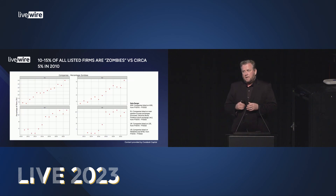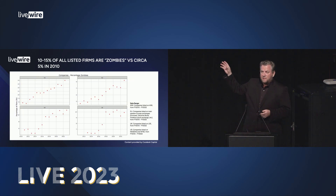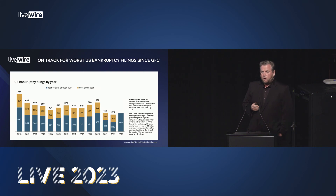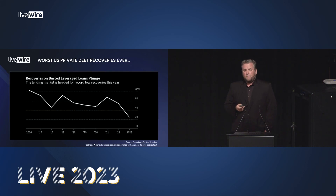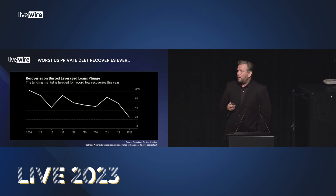We also have the tremendous rise of zombie companies. Ten years ago only about 5% of global listed companies were zombies — firms that don't have sufficient income to pay the interest on their debt. Today that's about 10 to 15% of all listed firms using FY22 data; if we were to mark to market today it would be much worse. The cracks are already appearing — we're seeing the biggest default cycle in the US since 2010, with bankruptcy filings year-to-date at their worst since 2010. Recovery rates on senior secured loans in the US have dropped to their lowest levels ever, normally 70-80%, now running at 25% year-to-date.